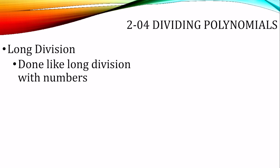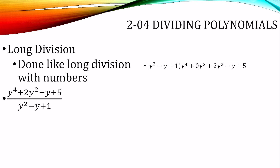Long division is done like long division with numbers, like you learned back in elementary school. The number on the bottom is what you're dividing by — it goes on the outside of the symbol. The number on top goes inside. Notice we have y to the fourth and y squared but no y cubed, so we have to include zero y cubed when we set this up. We have to have every power of y.